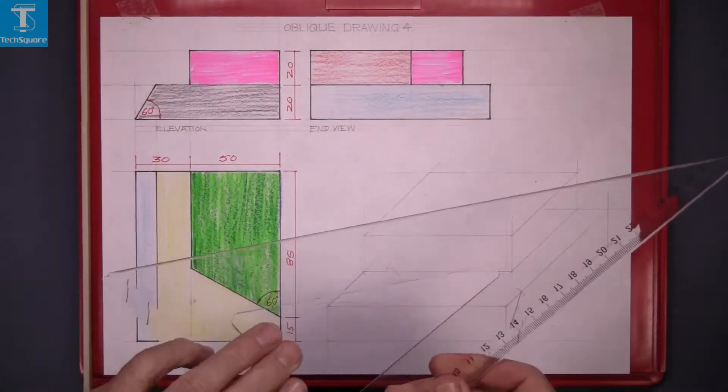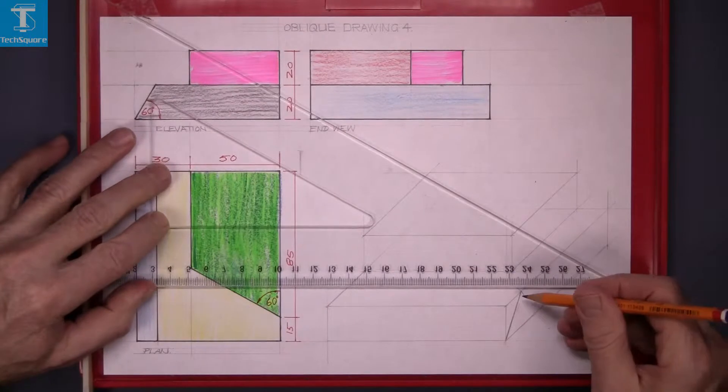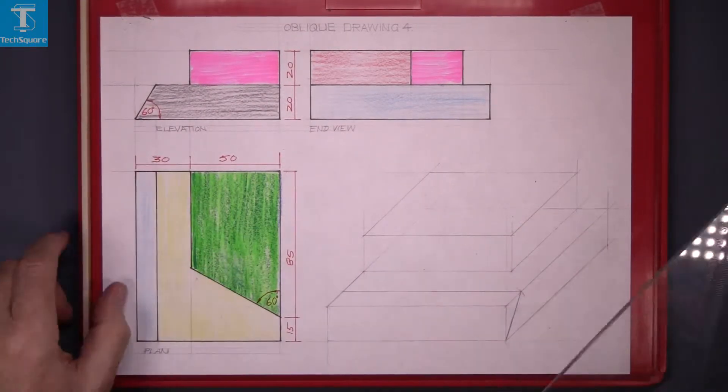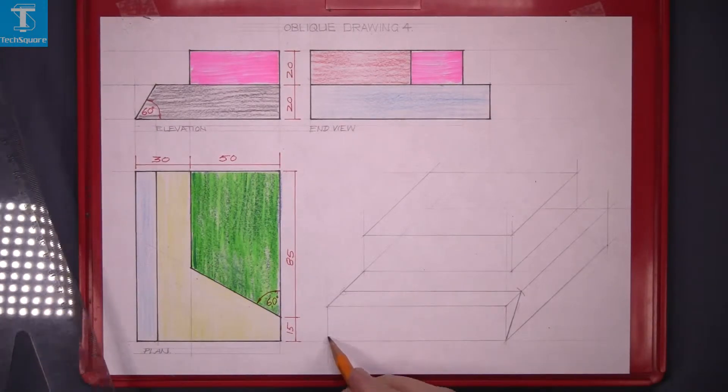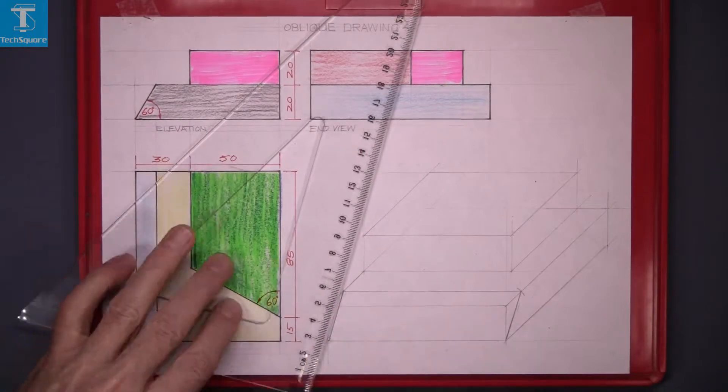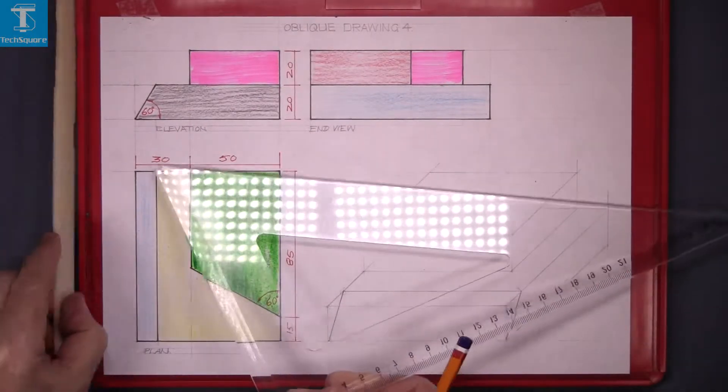Now draw that line across the top and that gets you the point to join back down to the corner at the bottom. That's the slope on the front of the base.